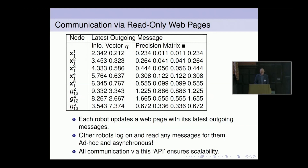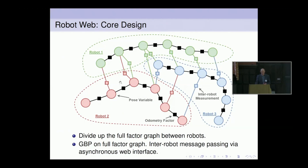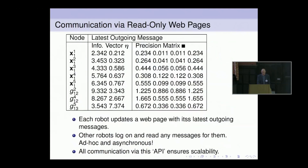These messages are small — a typical message in GBP is a small matrix, something like a 3×3, depending on the dimensionality of the problem. The robots just download a small table of numbers from each other. Via this ad hoc communication, the whole thing can converge. This is really important for scalability — we'd eventually like this to run for hundreds or thousands of devices. Robot two doesn't need to know how robot one's sensors work, because the sensor model is held within robot one. It's a very simple and scalable API-like interface.